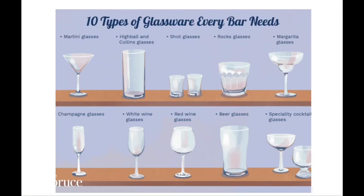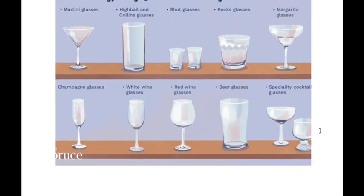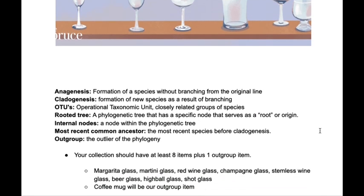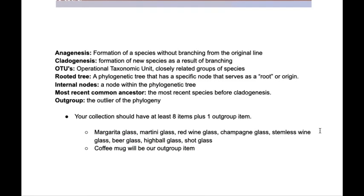For the last mini video, we are going to do a glassware phylogenetic tree. Here is the word bank that we'll be drawing from: anagenesis, cladogenesis, OTUs, rooted tree, internal nodes, most recent common ancestor, and outgroup.